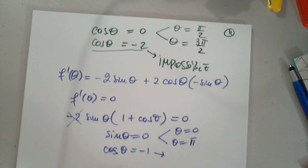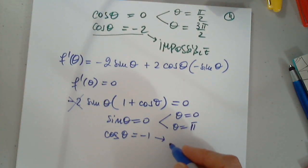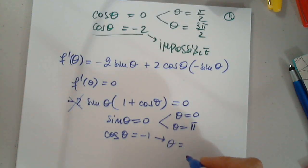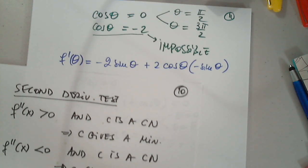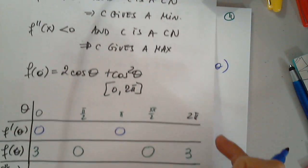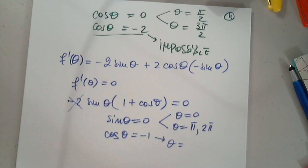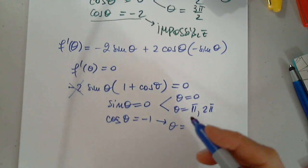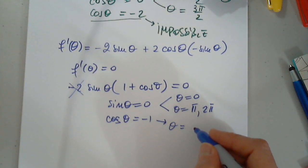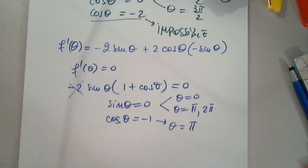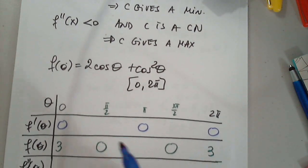Where is cosine negative one? A student asks: would sine zero also be at two pi? Yes, thank you. And cosine theta equals negative one is at pi. So I don't have to write anything else. That's nice.